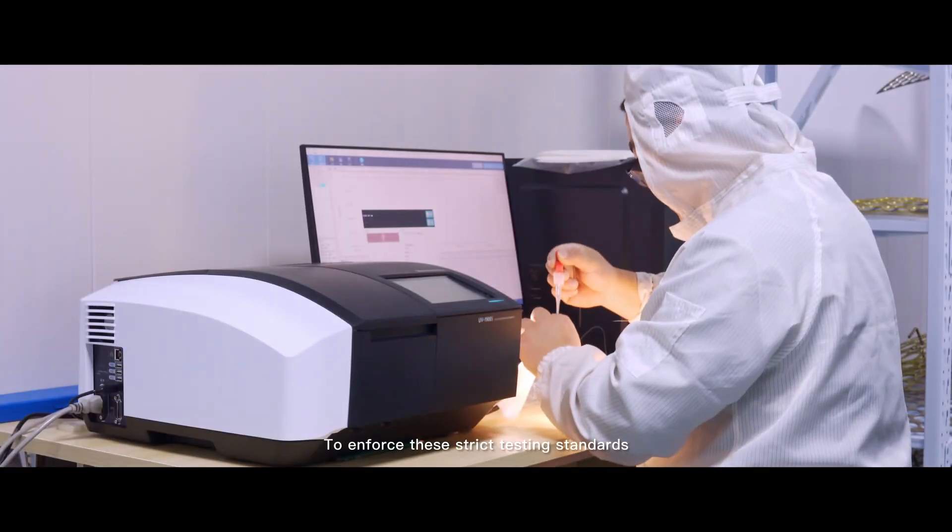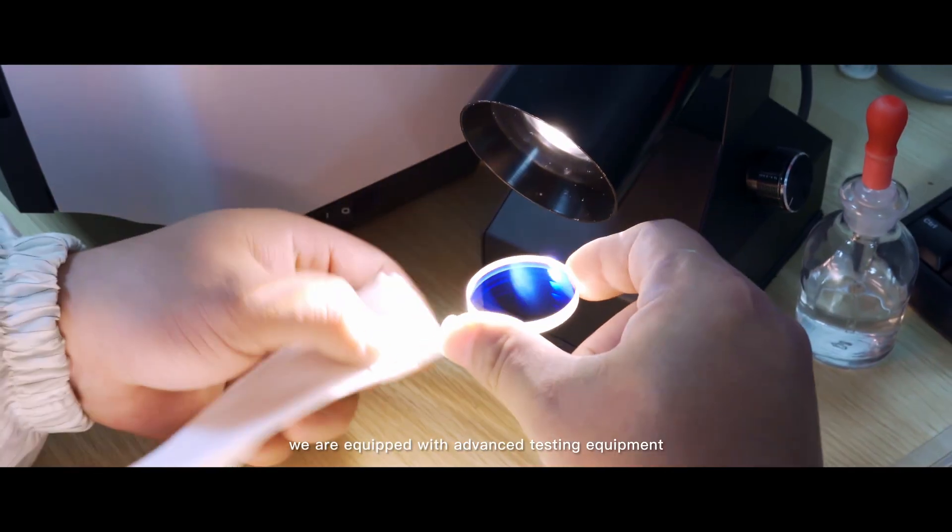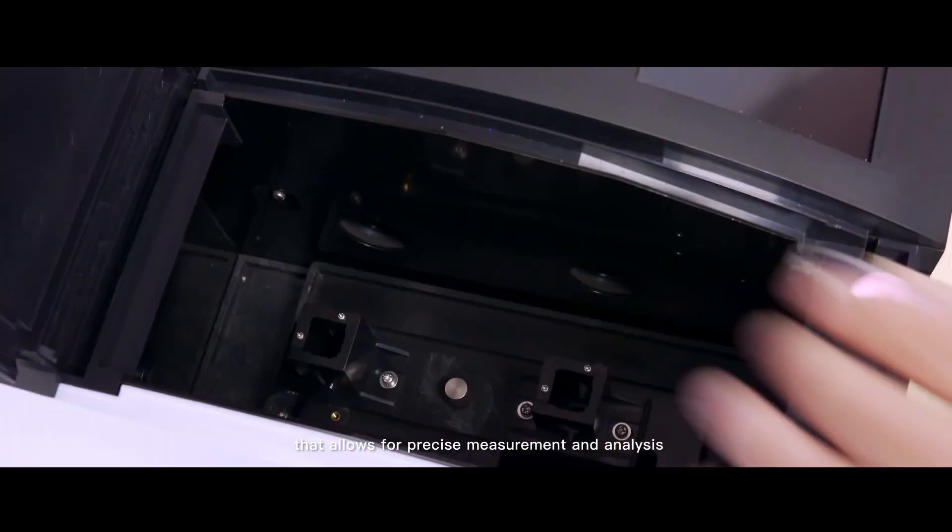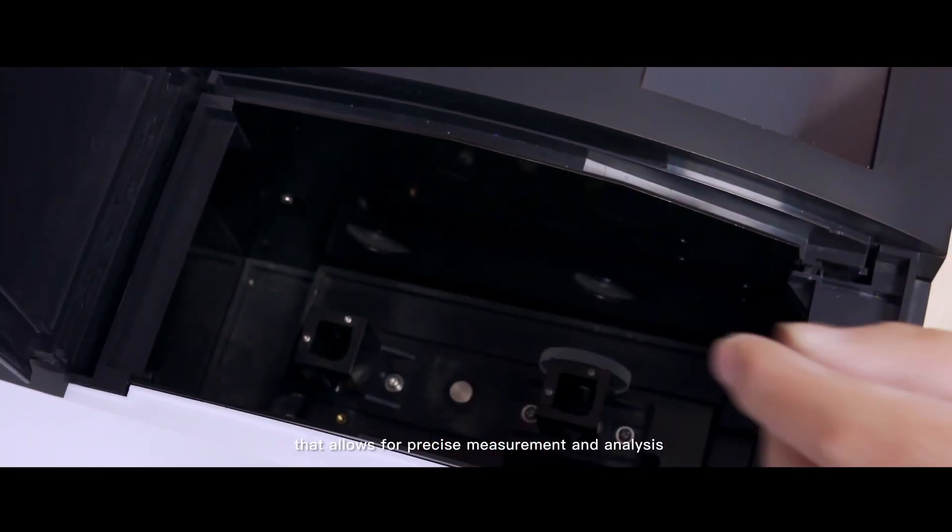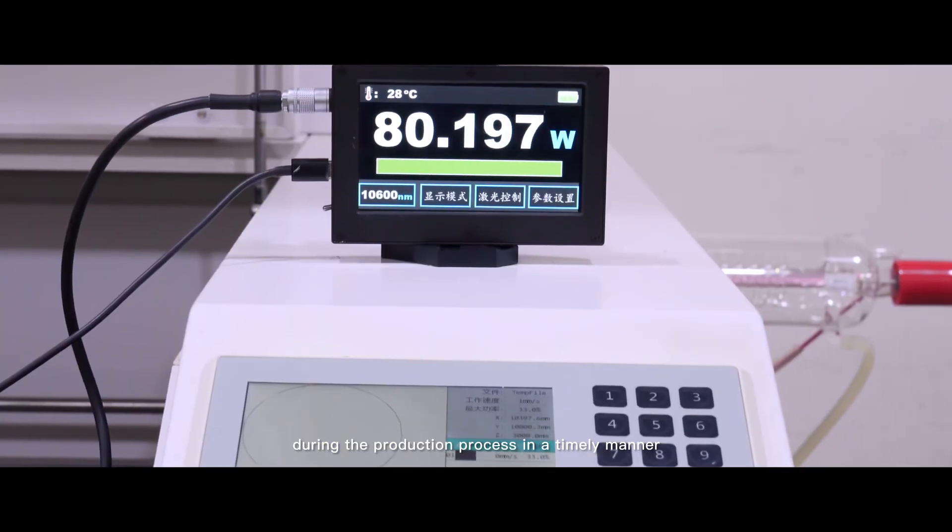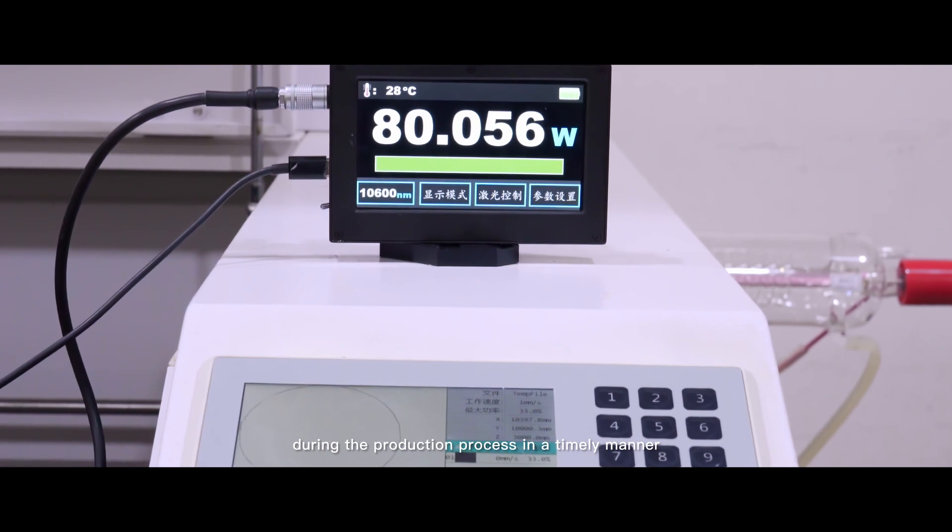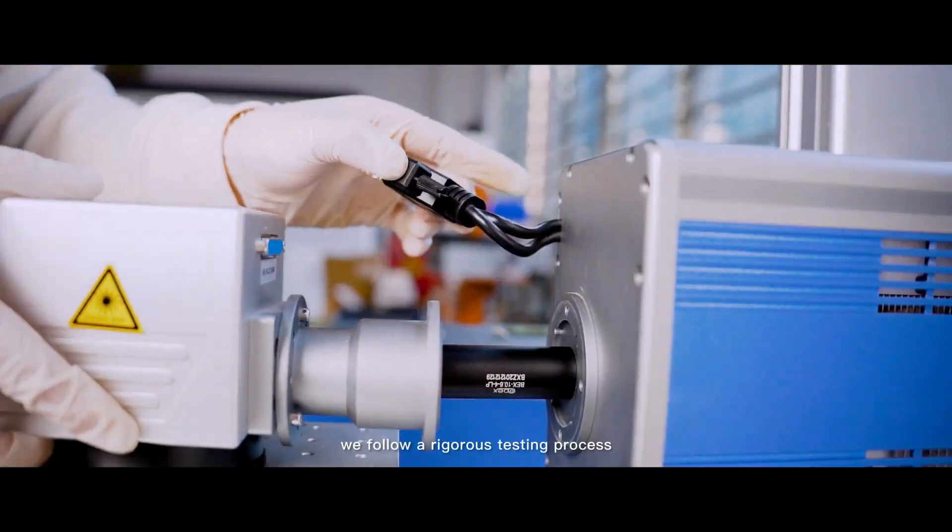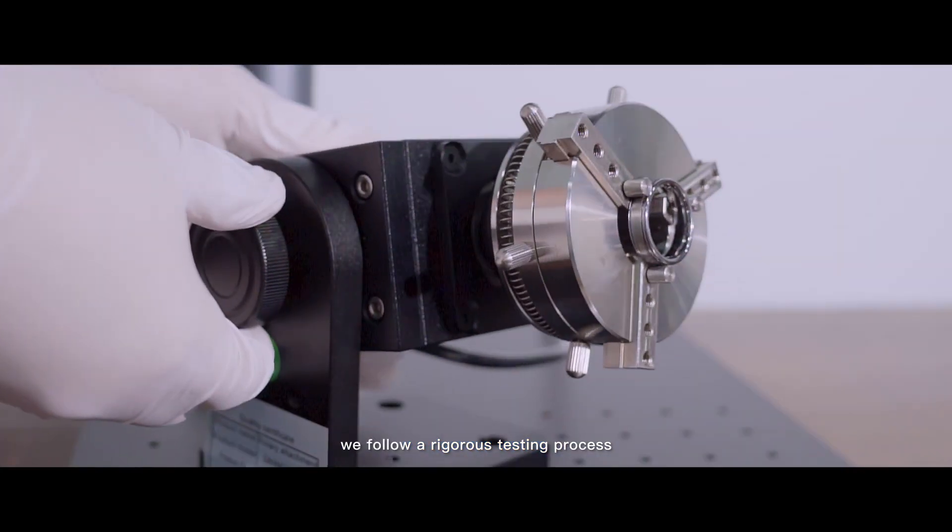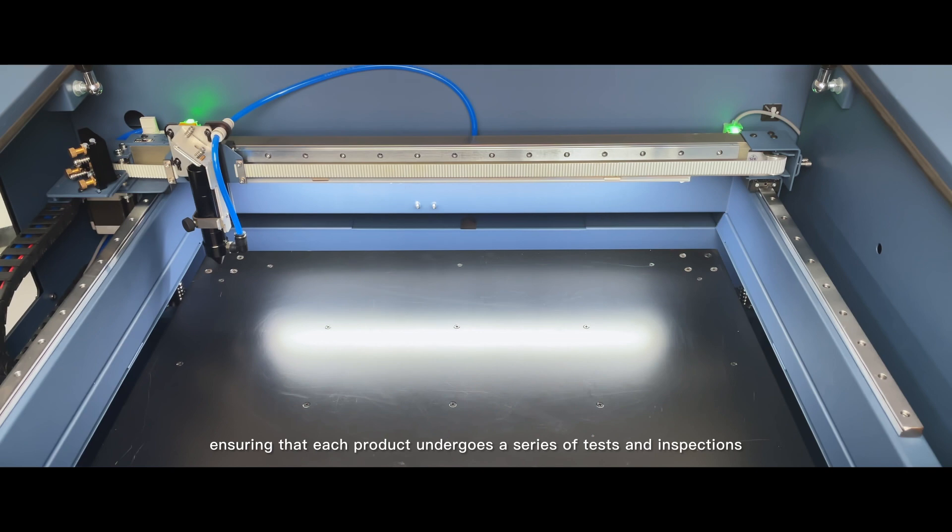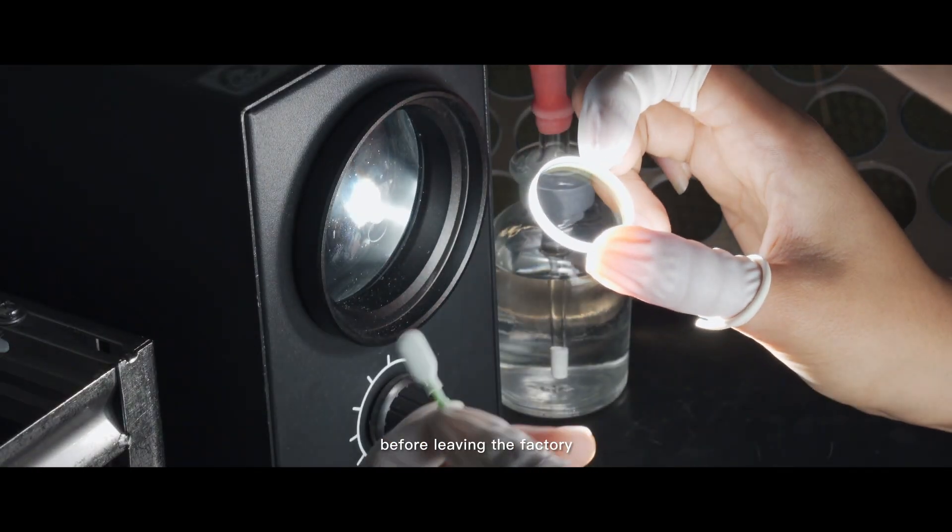To enforce these strict testing standards, we are equipped with advanced testing equipment that allows for precise measurement and analysis, helping us to identify any potential quality issues during the production process in a timely manner. In addition to having advanced testing equipment, we follow a rigorous testing process, ensuring that each product undergoes a series of tests and inspections before leaving the factory.